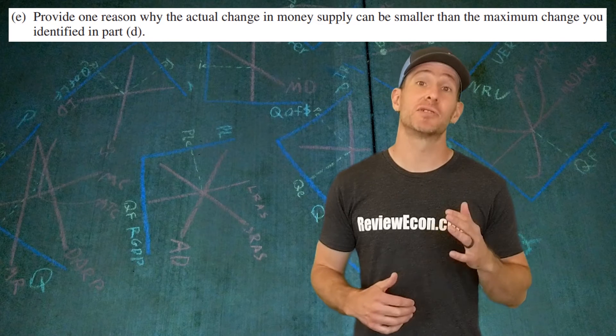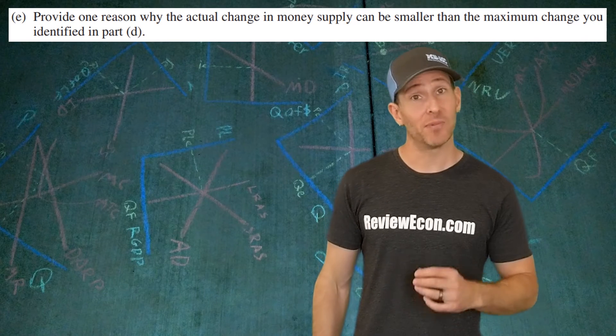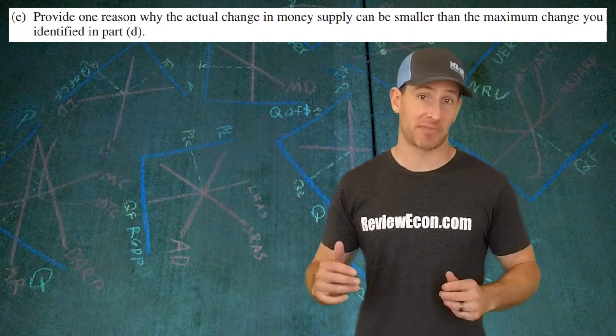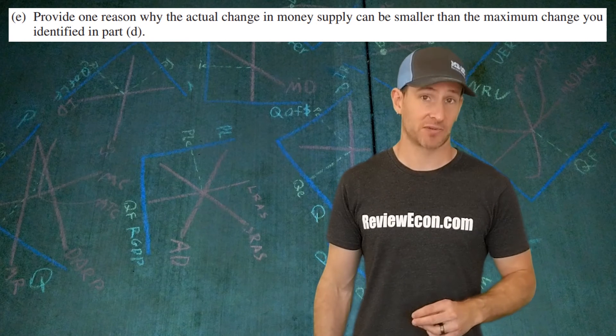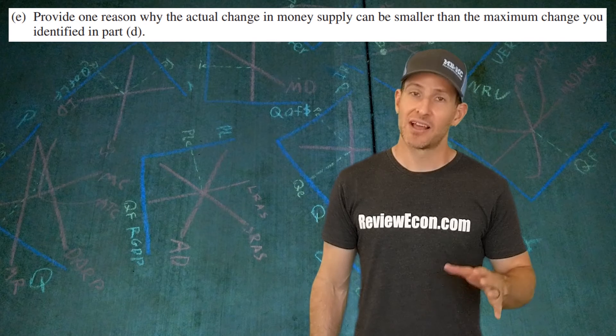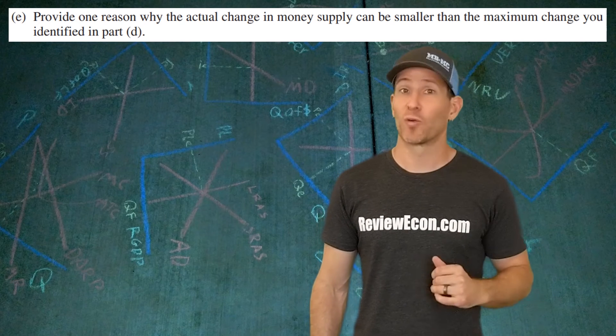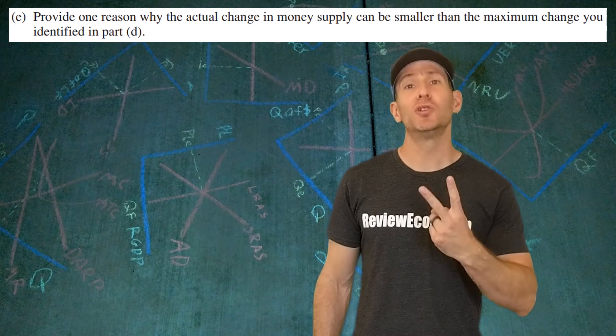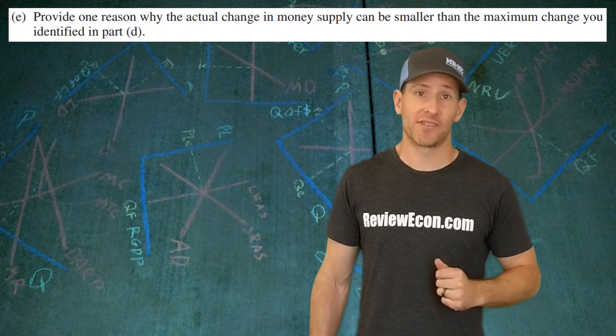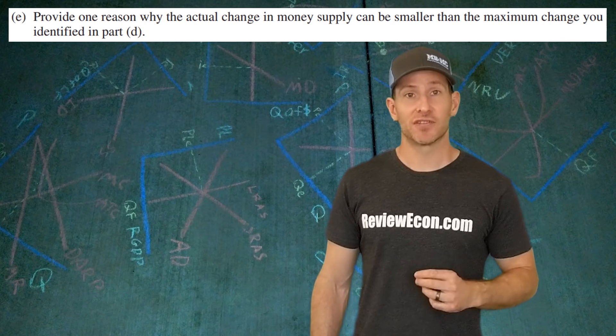Part E asks us to explain why it is that the money multiplier only gives us a maximum amount of new money, loans, and deposits that can be created from excess reserves. The fact is, those maximum amounts are rarely, if ever, reached. And here we're trying to figure out why. There are really two reasons why, and only one of them has to be given.